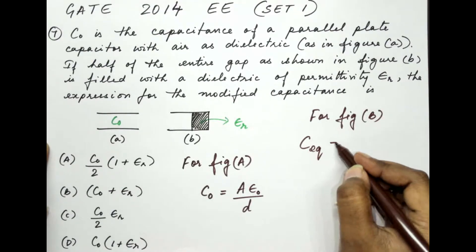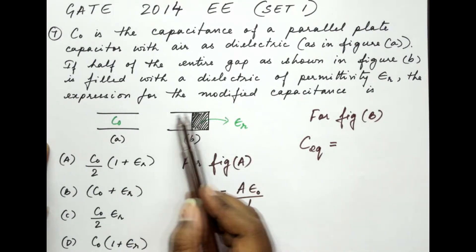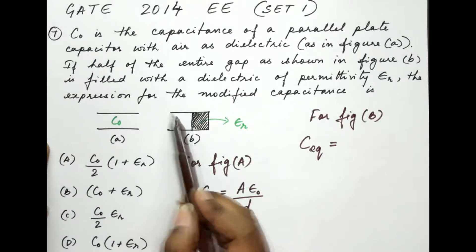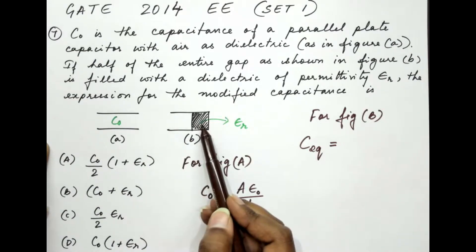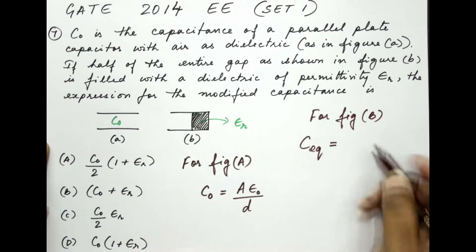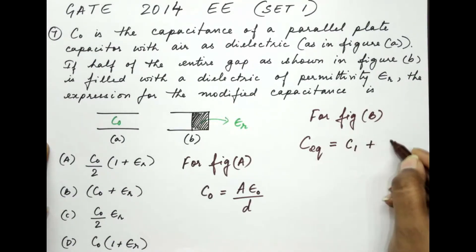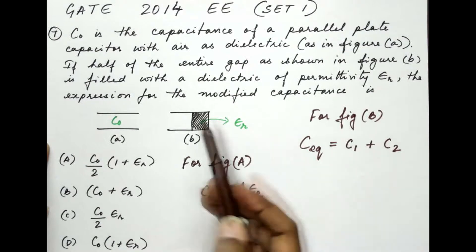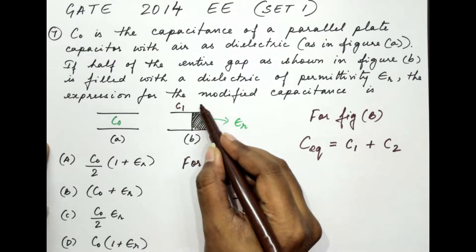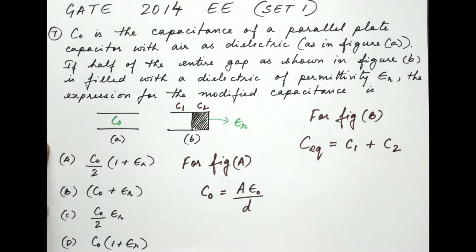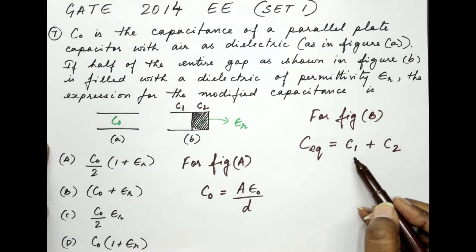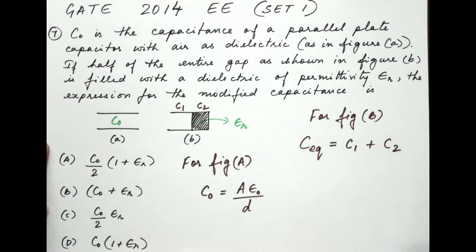Now C equivalent, when we have an arrangement like this, where half of it is filled with the dielectric of air and the other half with another dielectric, the modified capacitance would be C1 plus C2. Considering this is C1 and this is C2. We will have to note down the expressions for C1, C2 and then solve further.